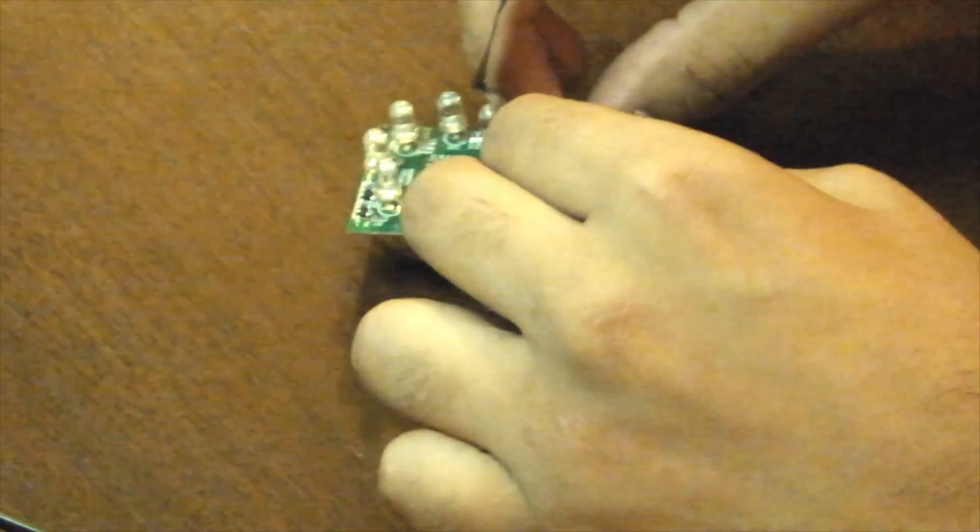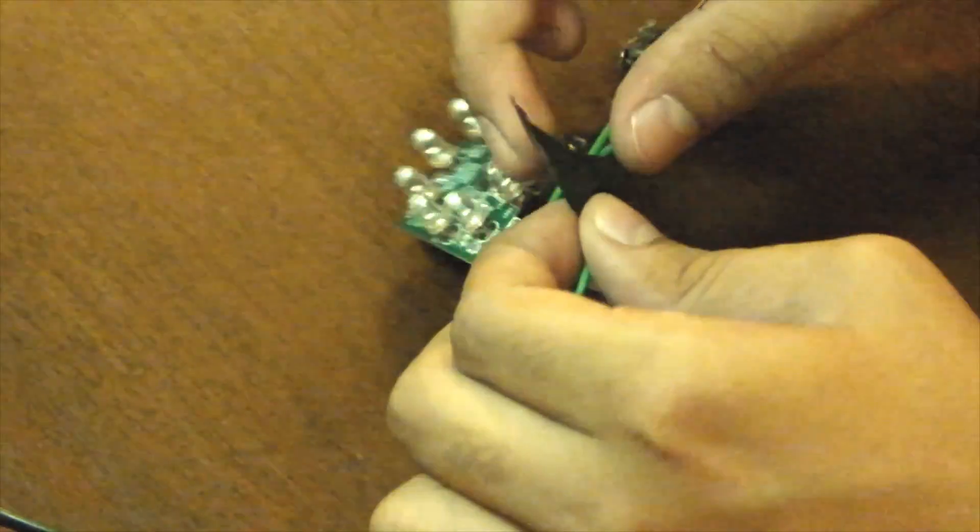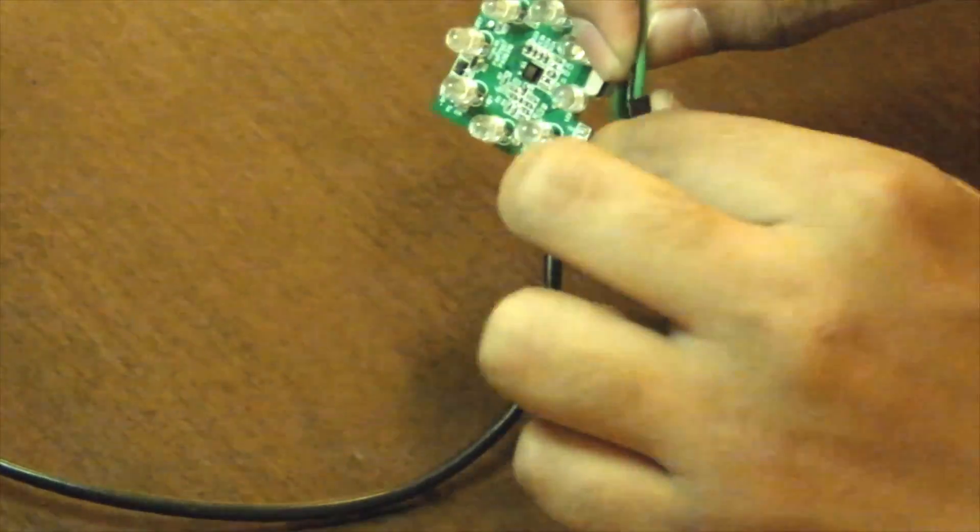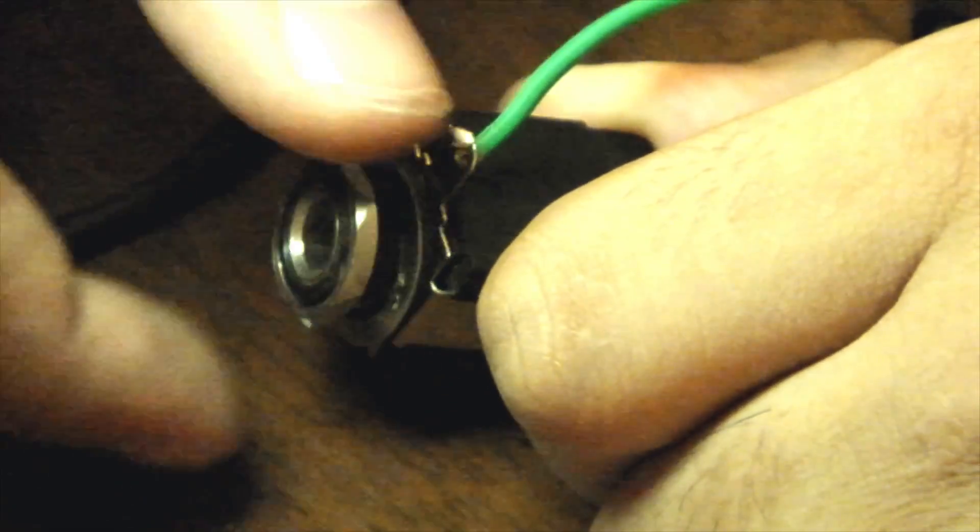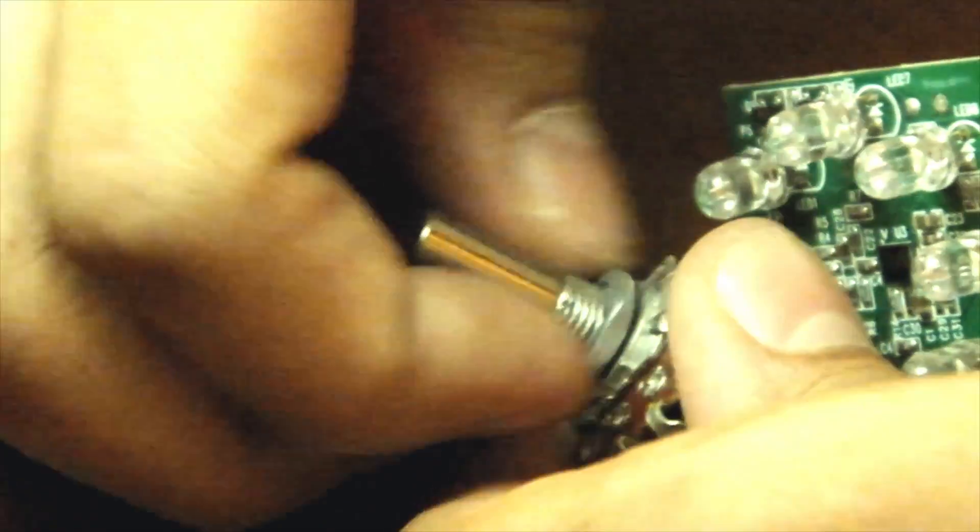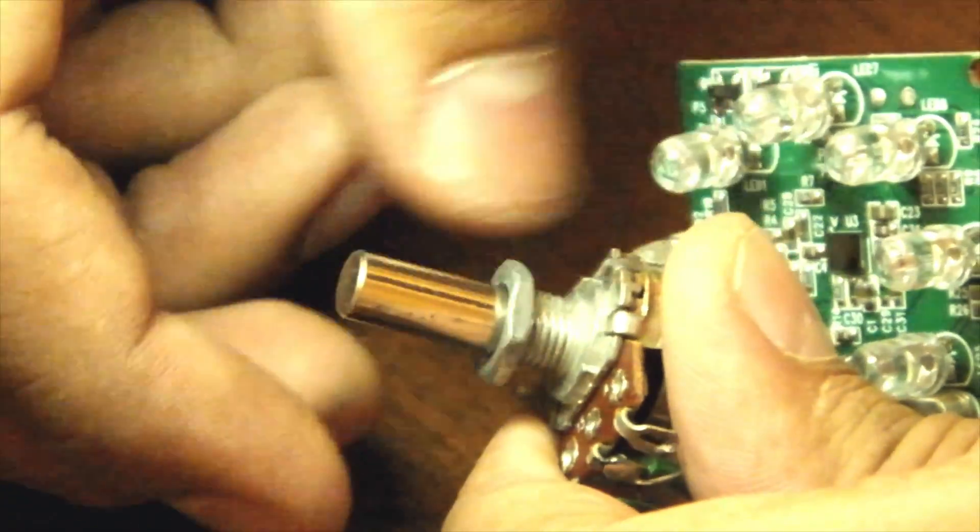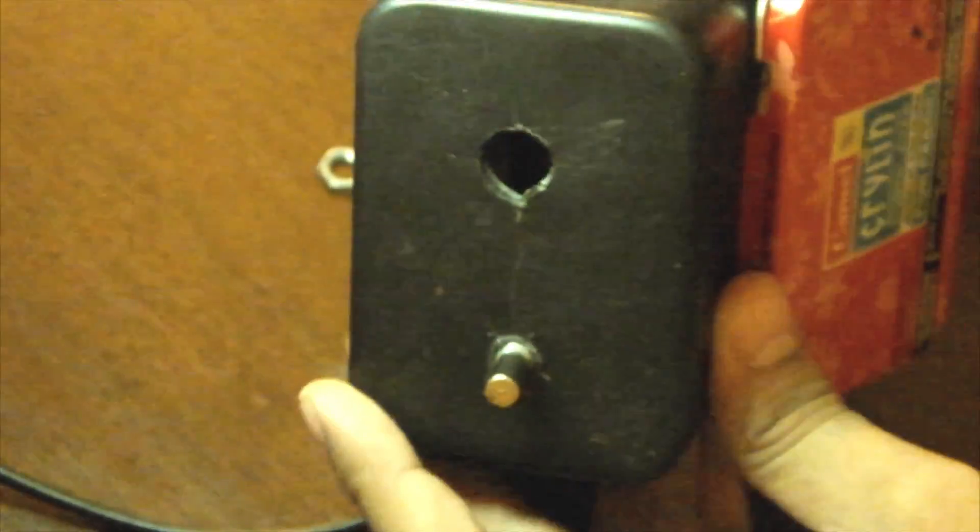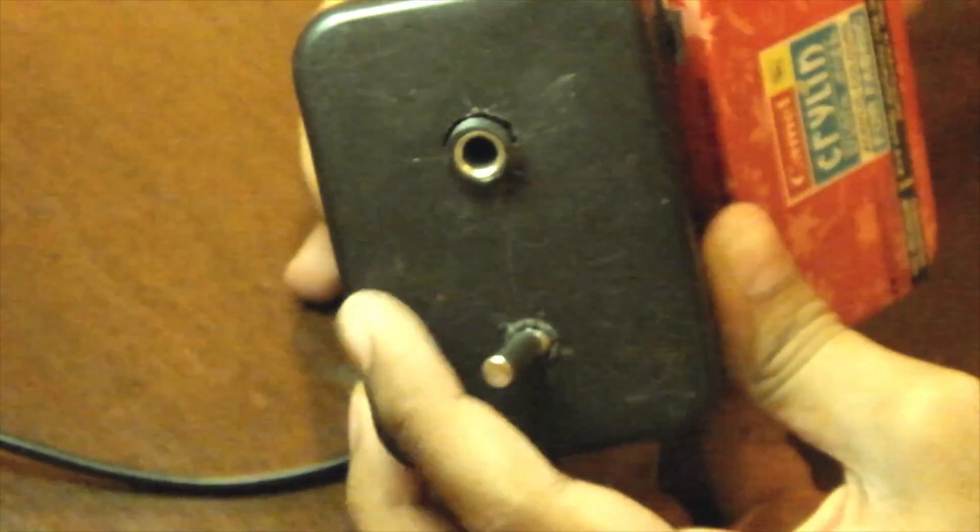Wrap up any exposed connections with insulation tape to prevent short circuits. Unscrew the nuts of the components, fit them into the box. Screw the nuts back on and tighten them with a spanner or a plier.